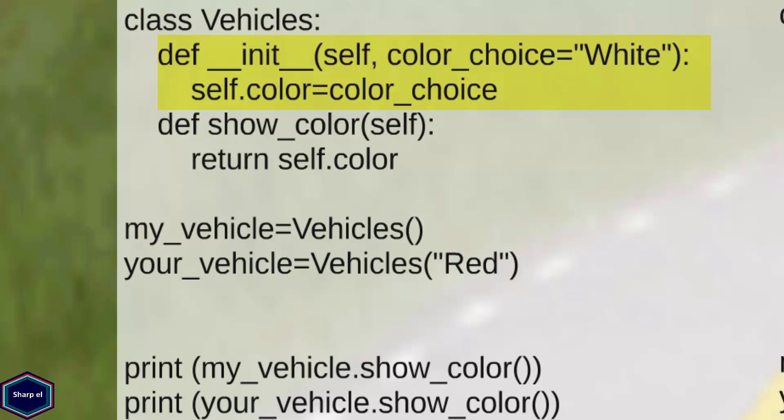In this example, init method takes two parameters, object itself and color. You can also have multiple arguments. Now when I create a new object of class vehicle, the instance variable color is always equal to white. Similarly, I can also give different color than white while creating a new object. So by using initializer method, I can set the desired instance variable to a certain value. Again, I can also do all this by calling a method, but initializer method is just made for this purpose.